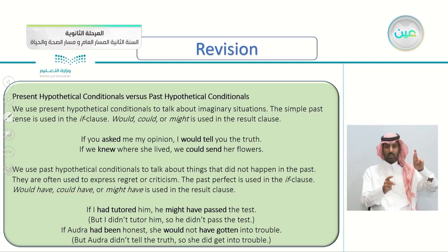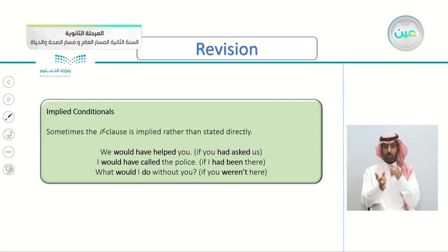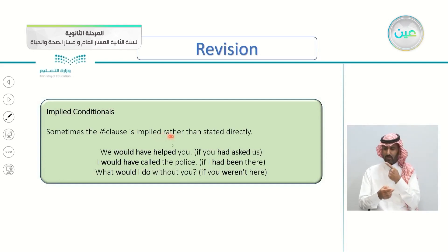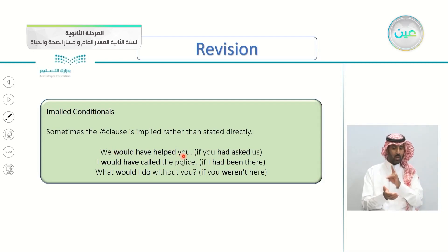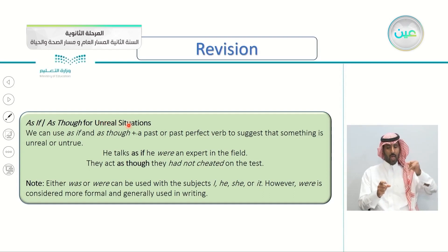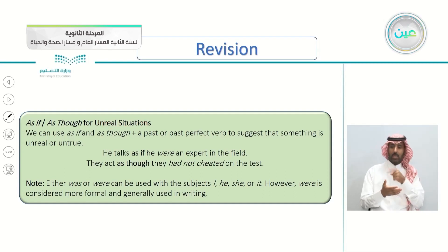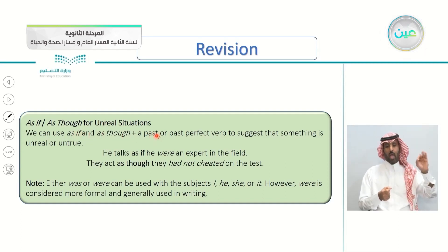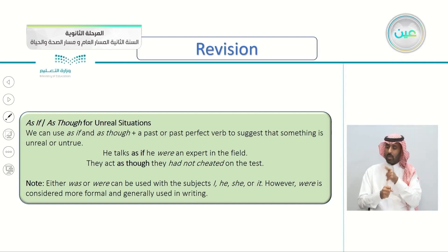Again, in the result clause. We also learned about implied conditionals — you don't have to say it; it is implied rather than stated directly, as in: 'We would have helped you if you had asked us.' And we learned about 'as if' and 'as though' for unreal situations — we can use as if and as though plus a past or past perfect verb to suggest that something is unreal or untrue.